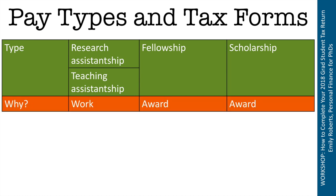The reason why you're receiving each of these three types of income is important for your taxes. With an assistantship, you are working to receive that income — you have an employer-employee relationship with your university as well as a student relationship. With fellowships and scholarships, you are not technically working to receive that money. They are awards granted to you most likely because of merit, demonstrated by being admitted to your graduate program or through an application process for an external award.